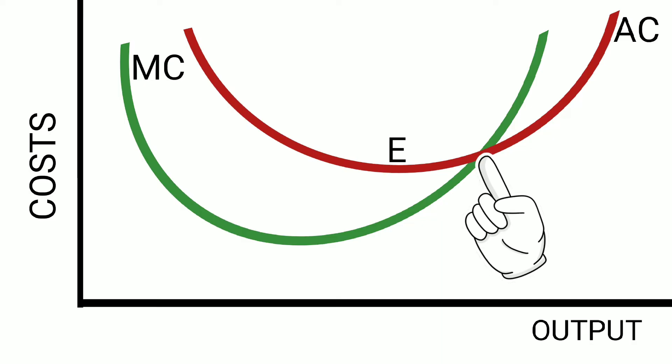Have a look at the next diagram. Here you can see that MC is passing through AC after the minimum point E — that is also wrong. Always remember: MC should pass through AC at its minimum point. The discussion about AC and MC ends here.